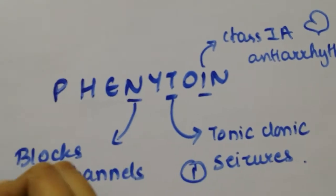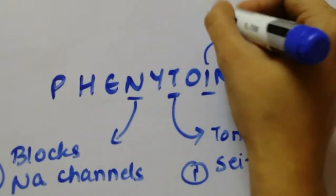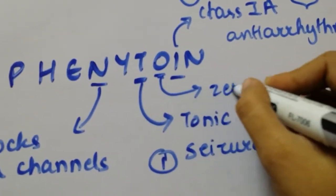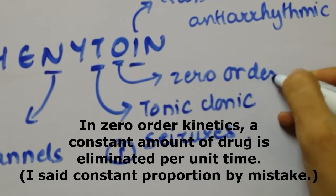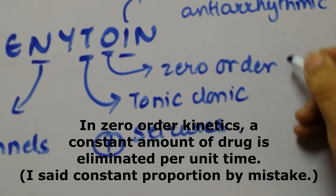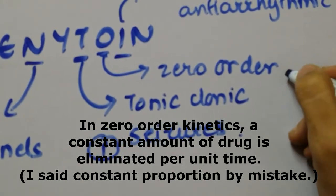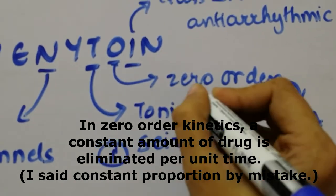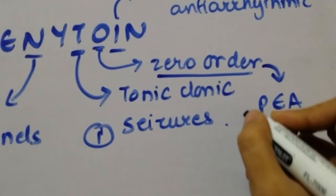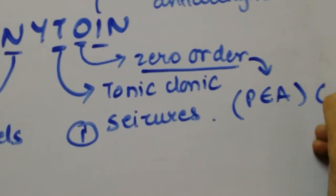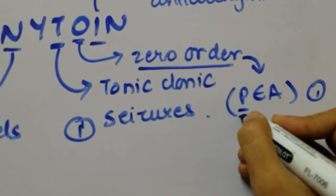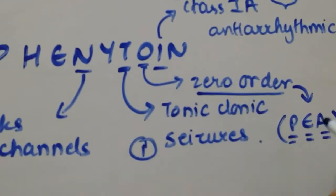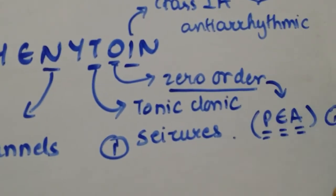Point number four is that it is eliminated by zero-order kinetics, which means that a constant proportion of the drug is eliminated. There are very few drugs that you should remember which are eliminated by zero-order kinetics, and the mnemonic for that is PEA, because P looks like a zero. P is for phenytoin, E is for ethanol, and A is for aspirin. That's point number four.